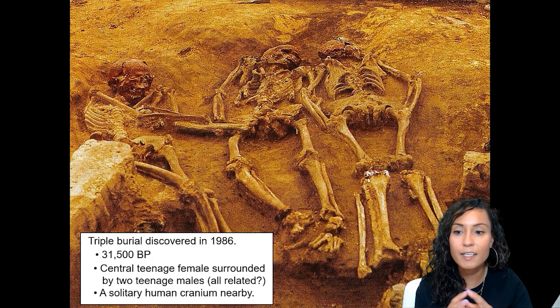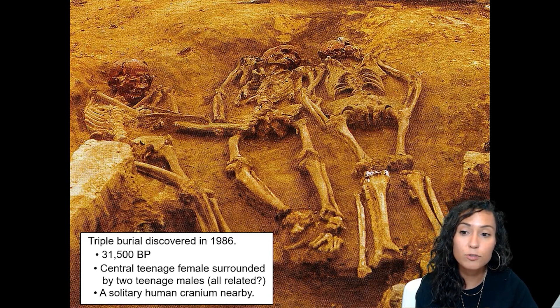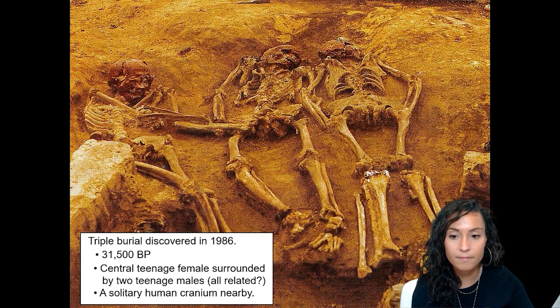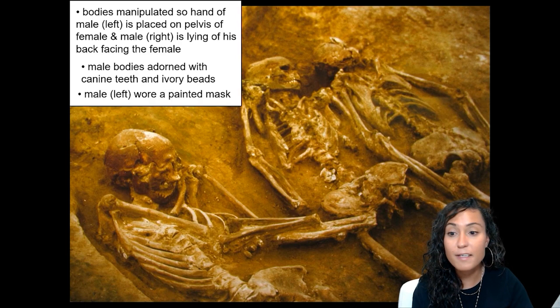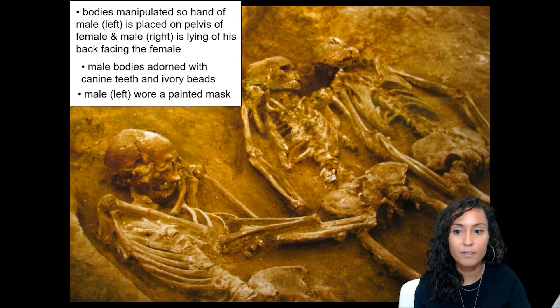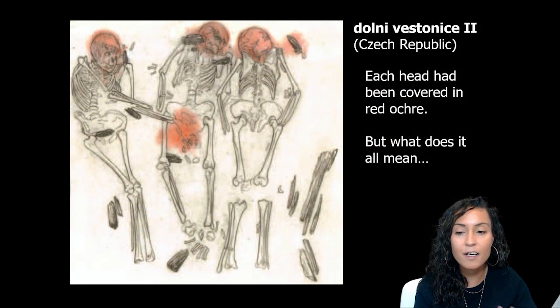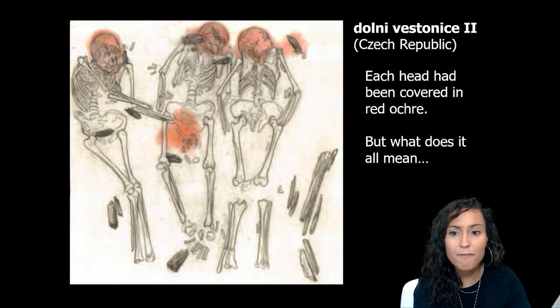Donne Vestancic also contained the remains of a triple burial: a teenage female surrounded by two teenage males. Analysis of the female's remains revealed a marked curvature of the spine, indicating she was likely crippled, while the two males were healthy and probably died in the prime of life. The male on the right was placed on his stomach facing away from the female, though his left arm was linked with hers. Both men had necklaces of pierced canine teeth and ivory on their heads, and the male on the left wore some kind of painted mask. Each head in the burial was covered in red ochre, and strikingly, the female's pubis was also covered in red ochre.